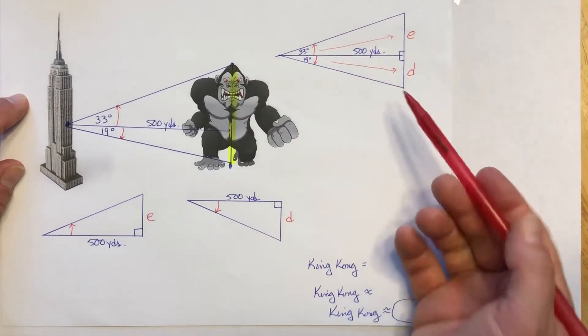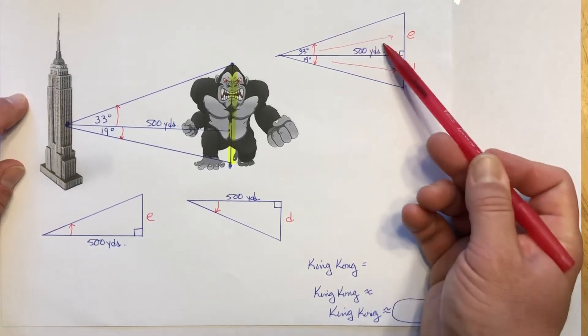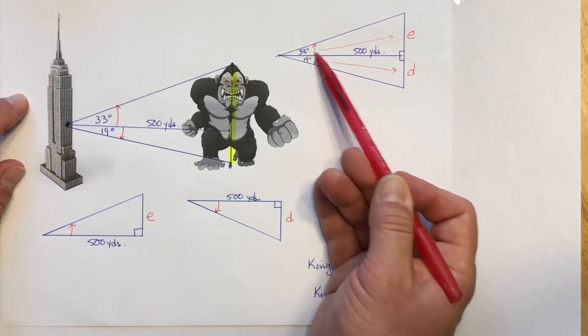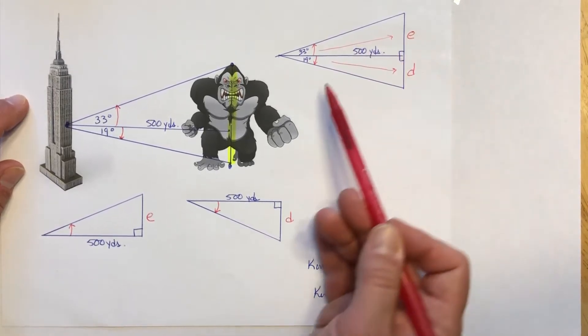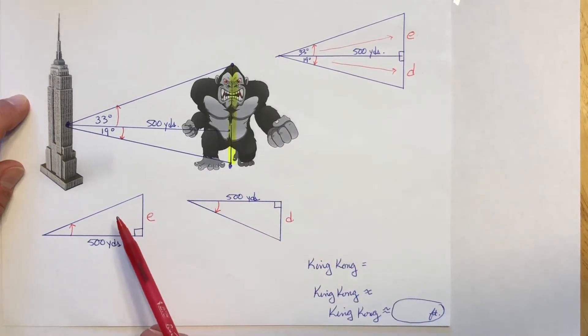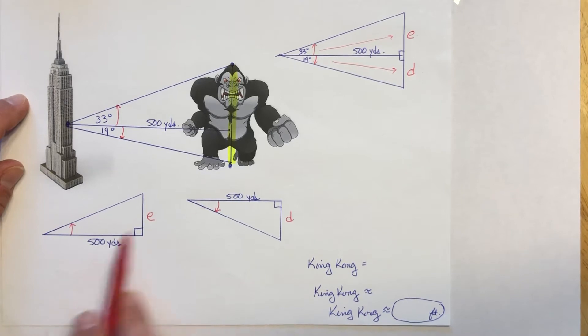So what I'm gonna do now is I'm gonna divide the two triangles into two separate parts, right? So I'm gonna use the top part first. So I have 33 degrees, 500 here. I'm looking for the opposite side. So let's direct our attention down here. So as you can see I've got my right angle, 500 here.